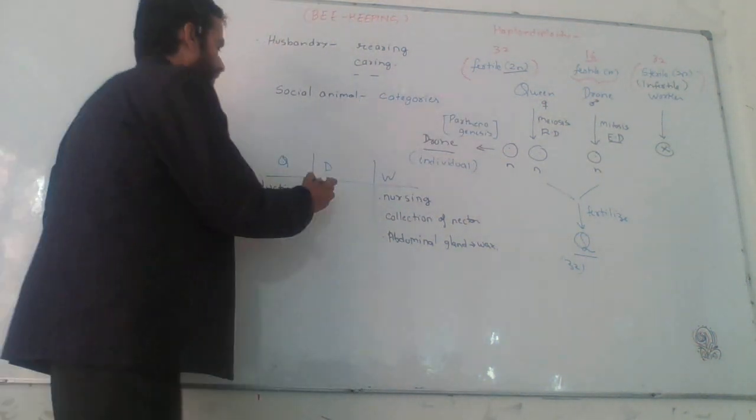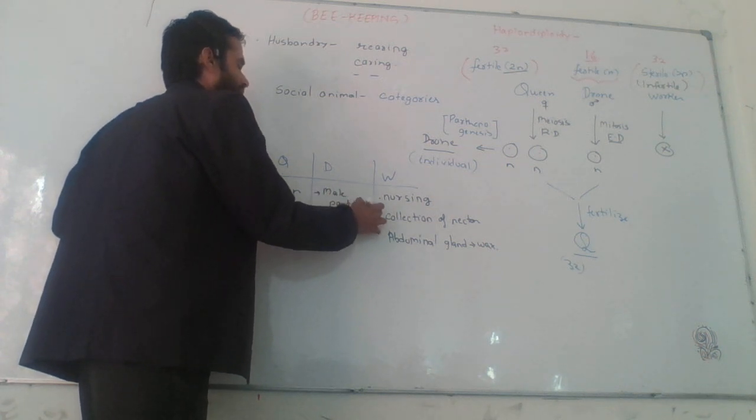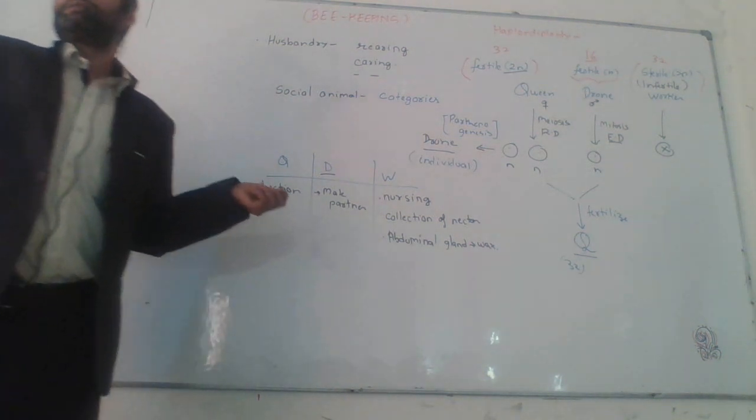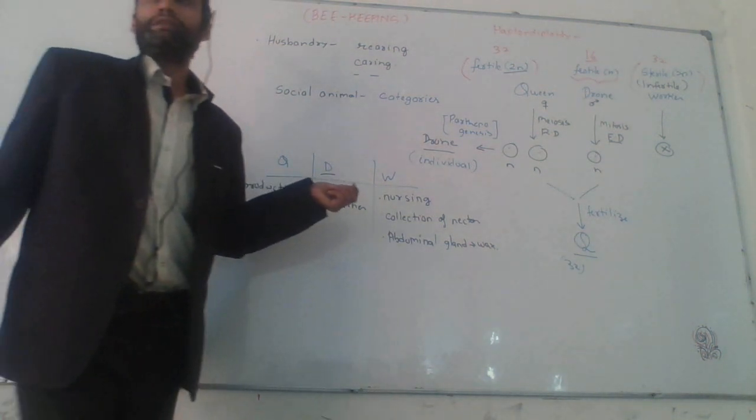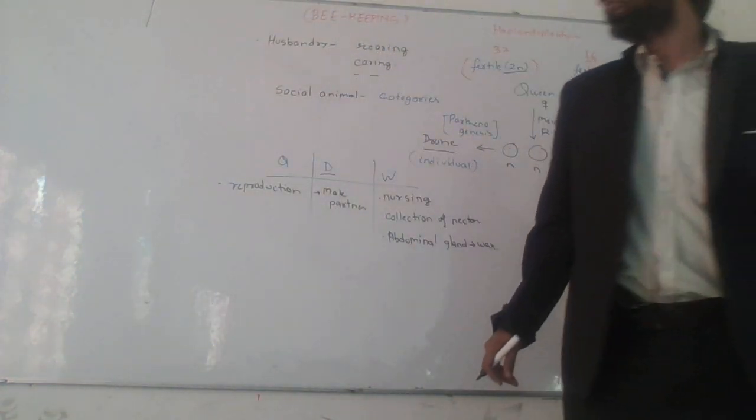Drone, male partner. After the reproduction, it will die. This is the unique feature. After the reproduction, male partner, drone, will die in the honeybee.